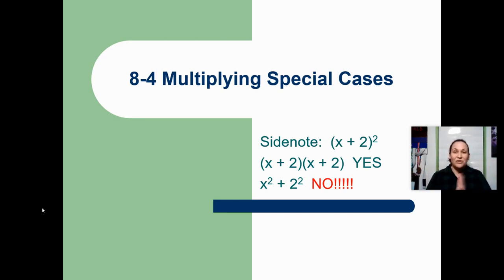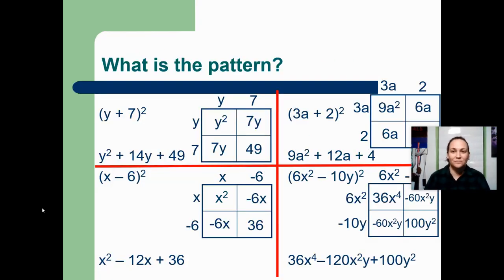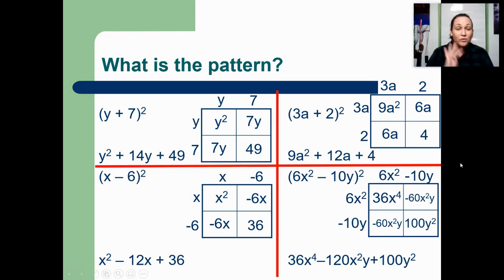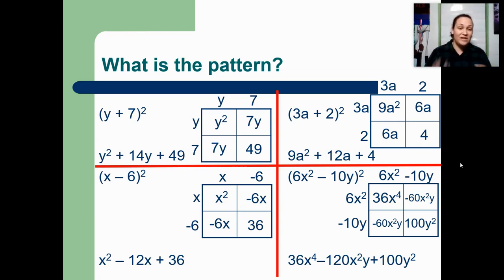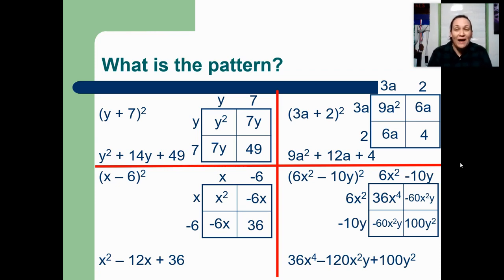Instead, I'm going to show you how to multiply this problem — x plus 2 quantity squared — using some patterns. To help us discover the patterns, I have written out four problems that all start as a parenthesis squared. I used the box method to figure out my final answer, and then we're going to analyze these and try to figure out what's the pattern — what is happening the same in every single question. If we can figure out the pattern, maybe we can find the final answer without doing the box method.